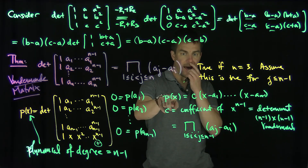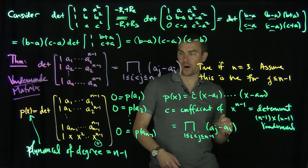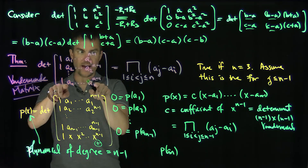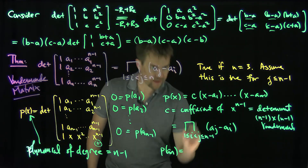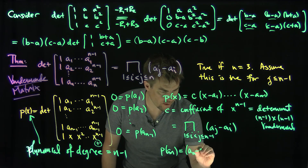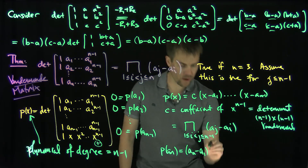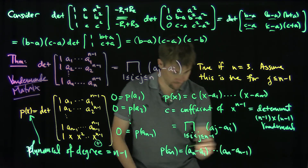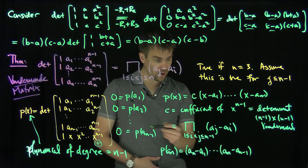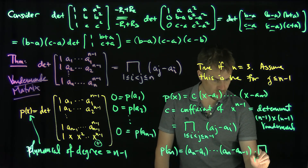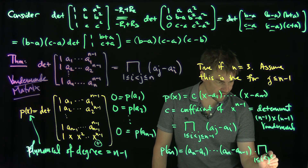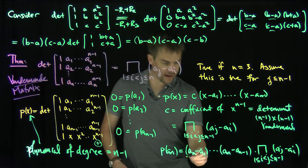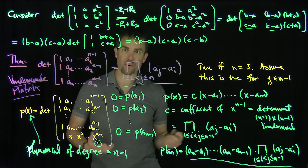Now, p(aₙ) is precisely the original Vandermonde determinant we want. Plugging x = aₙ into the factored form gives c times (aₙ minus a₁)(aₙ minus a₂)···(aₙ minus a_(n-1)). Each factor is of the form larger-row minus smaller-row. Multiplying by the induction hypothesis terms — the product over 1 ≤ i < j ≤ n-1 of (aⱼ minus aᵢ) — we can compactify the full expression into the product over all 1 ≤ i < j ≤ n of (aⱼ minus aᵢ), which proves the theorem.